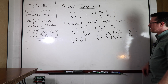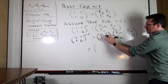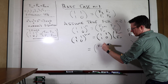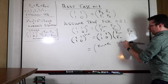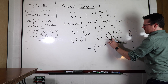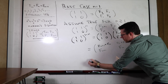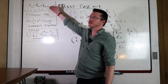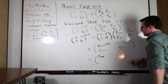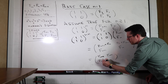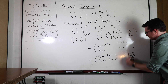Carrying out the matrix multiplication on the right-hand side, the entries become F(n+1) plus F(n) in the top-left, F(n) plus F(n-1) in the top-right, F(n+1) in the bottom-left, and F(n) in the bottom-right. Using the Fibonacci recurrence definition, these simplify to F(n+2), F(n+1), F(n+1), and F(n). So by induction, the lemma is proved.